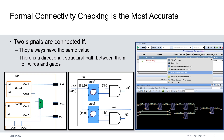True connectivity checking can really only be done using formal verification. When there is a violation, VC Formal CC solves the path in the schematic to help the user understand why a certain connection spec is not respected.